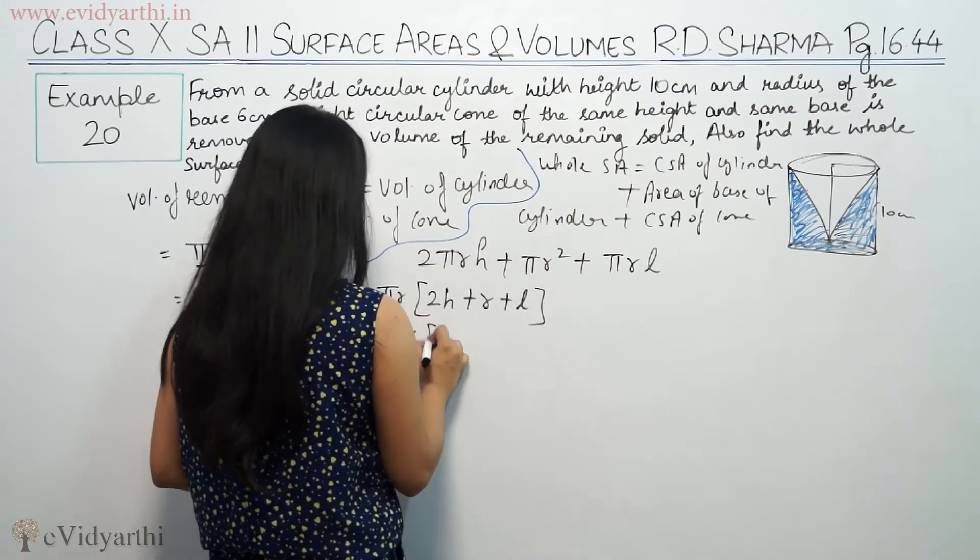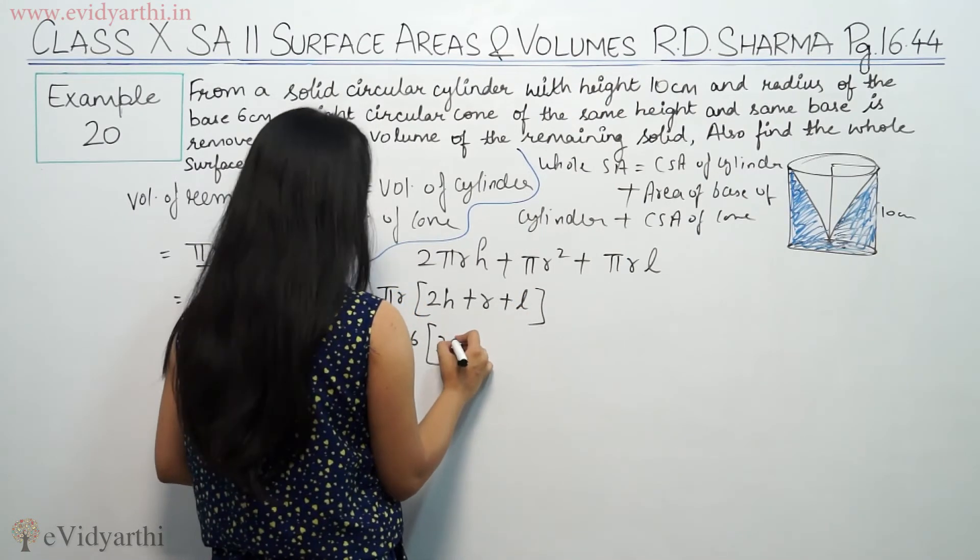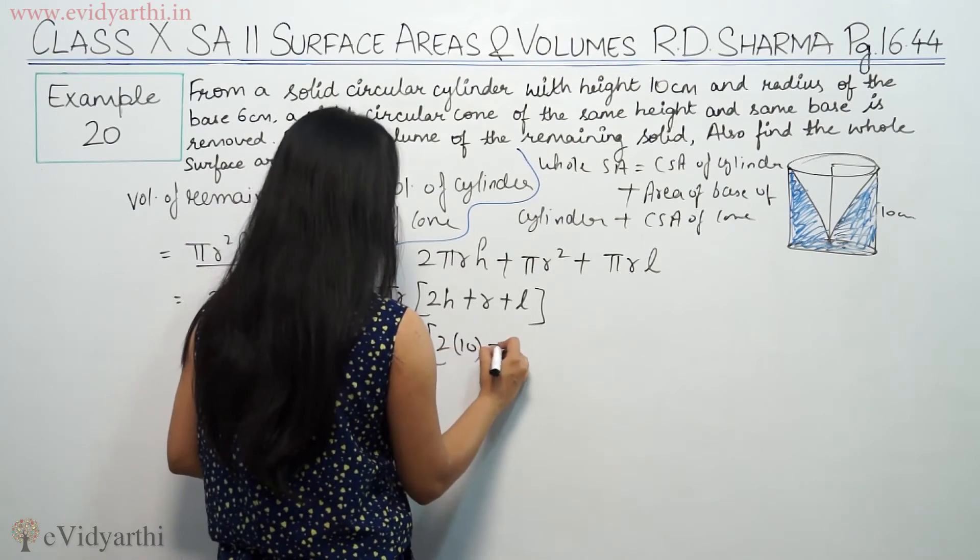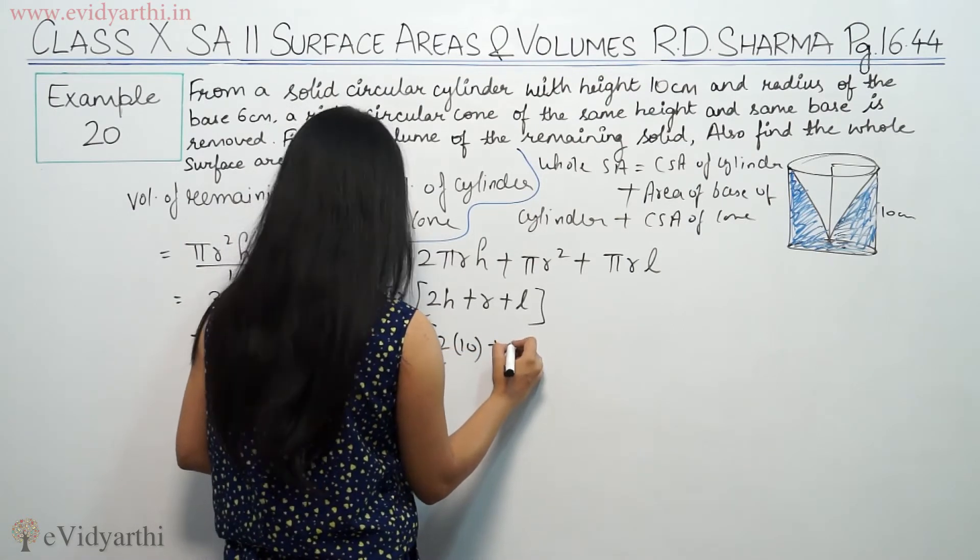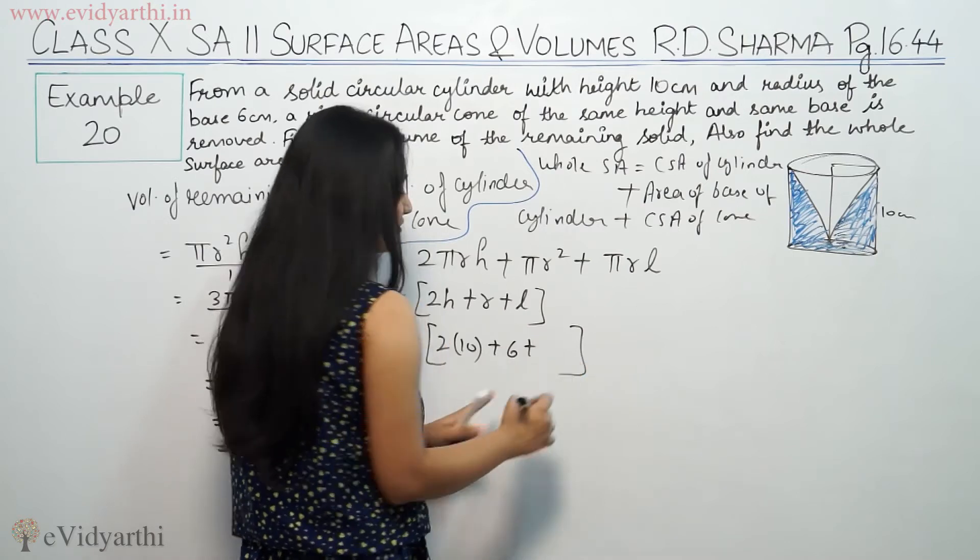So π times r is 6, times 2 times h. Height is given as 10, radius is 6. Slant height l we need to find.